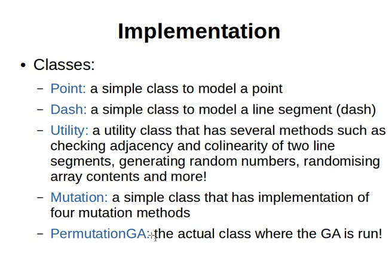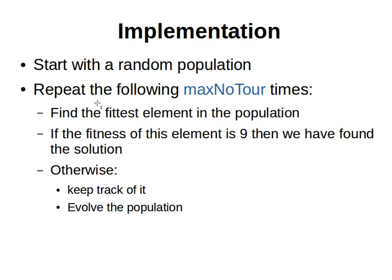And then the Permutation Genetic Algorithm class — this is the actual class where we run the genetic algorithm. In this class, we will start with a random population and then repeat the following steps a maximum number of times, or until we find the solution. So we have two ways to stop: either we find the solution, or we reach the maximum number of iterations. We find the fittest element in the population — if its fitness is nine, we found the solution. If not, we keep track of it, evolve the population, and repeat, finding the fittest element in the new population.